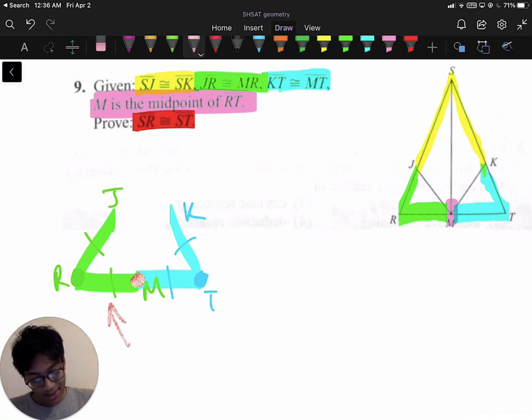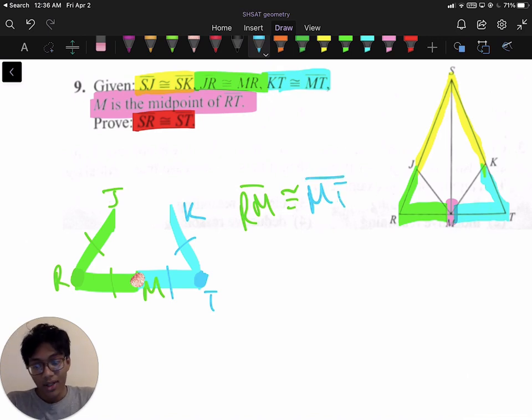That means these two sides, this side and this side, that they're equal. So that means RM is congruent to MT. Big deal. Well if RM is congruent to MT, that tells you a lot of information.